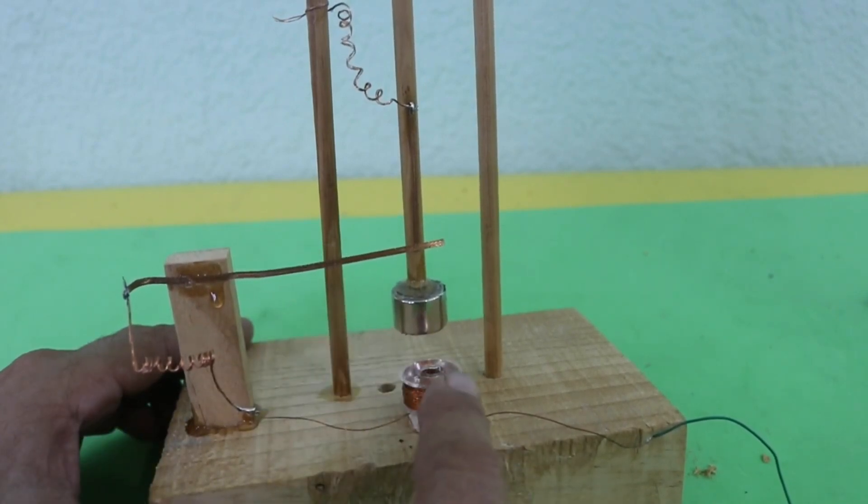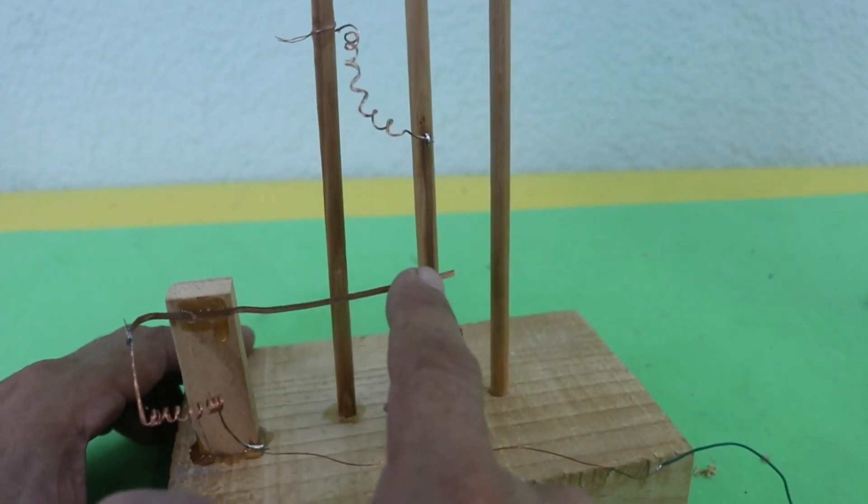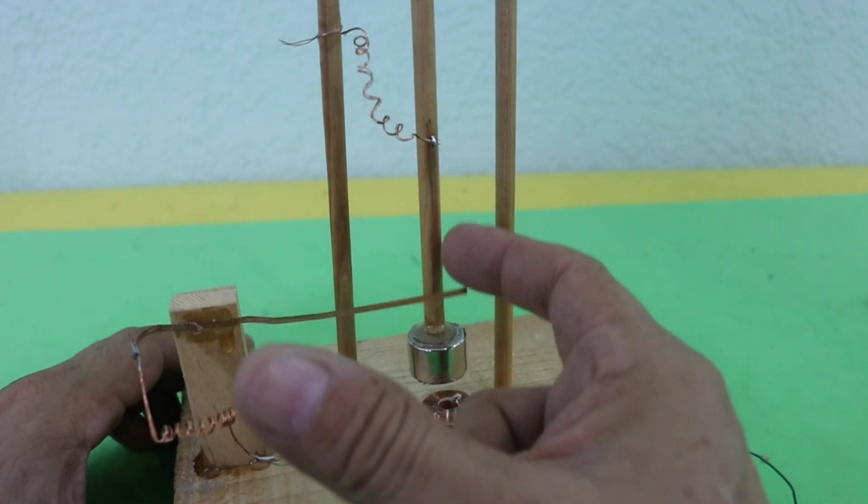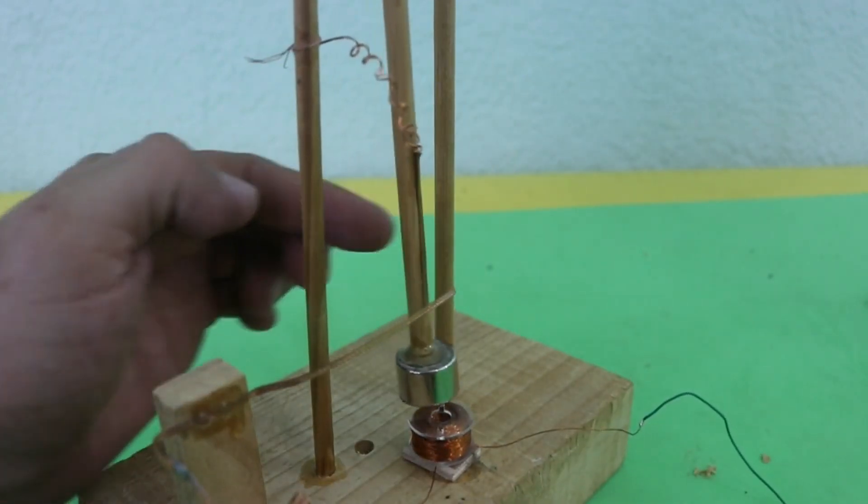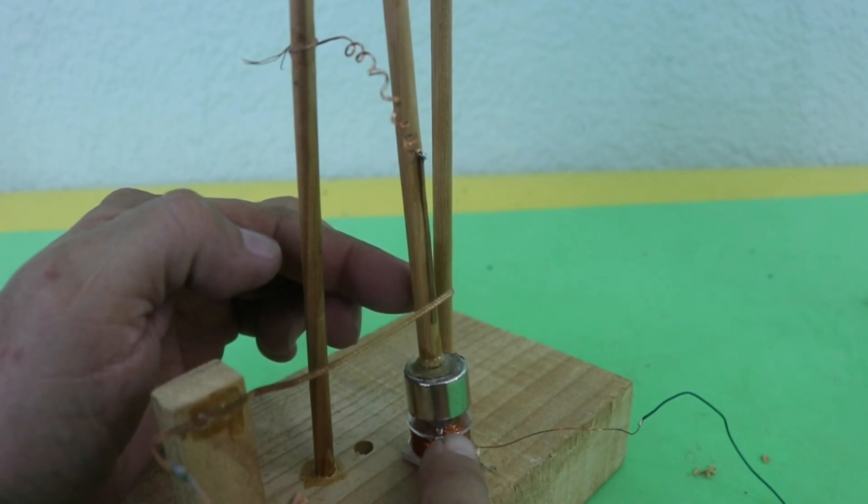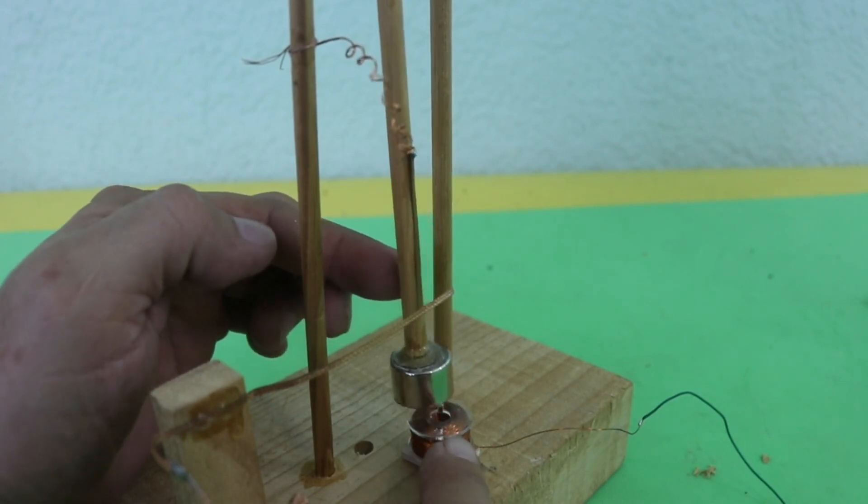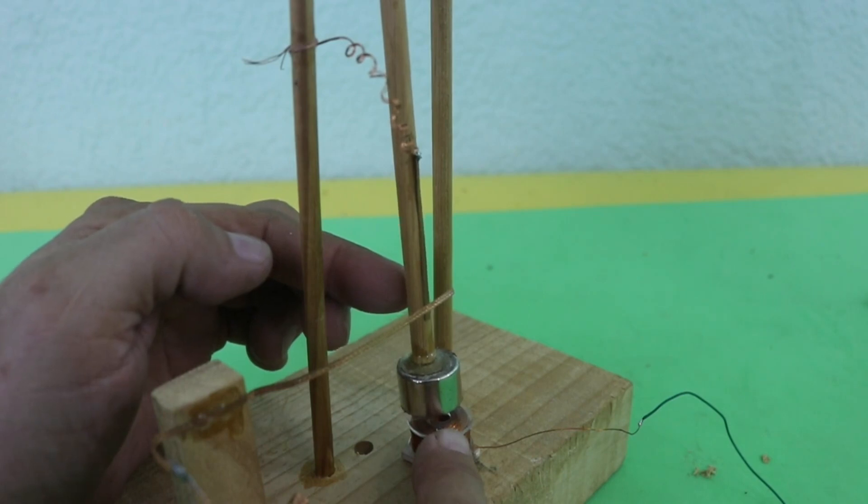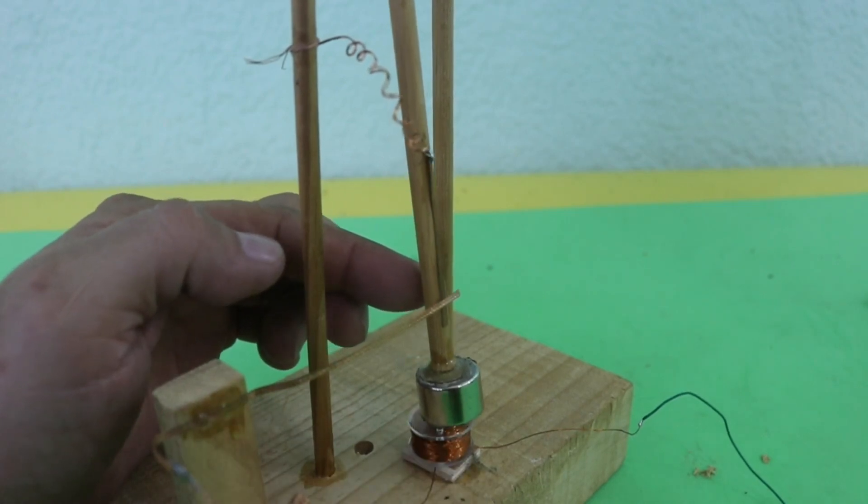Therefore, the coil will be energized when this wire makes contact with the wire at the rod, in this way. Here we have contact and the coil is energized. So, at this point, the coil attracts the magnet and gives a push.